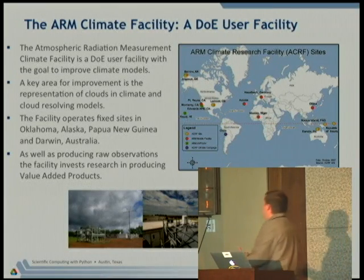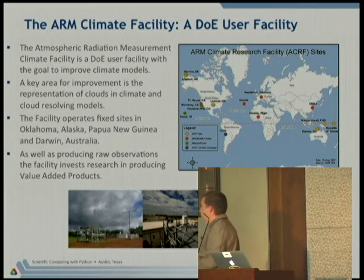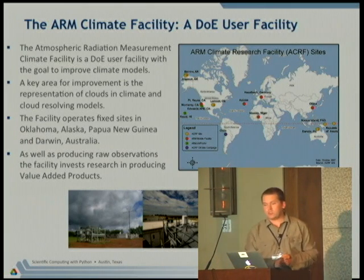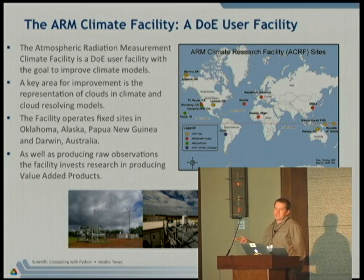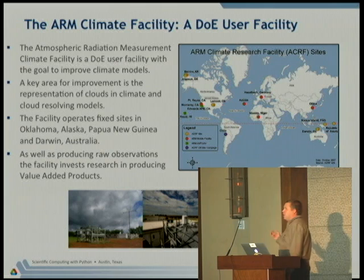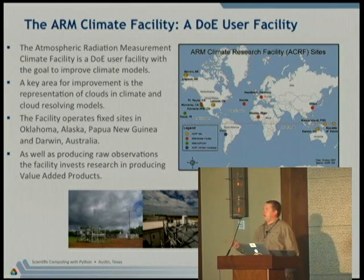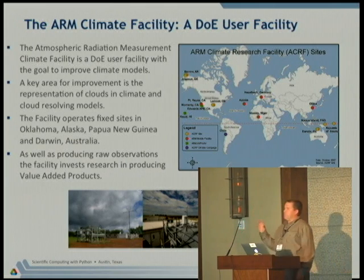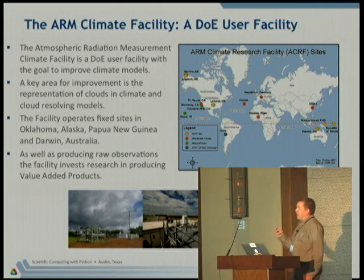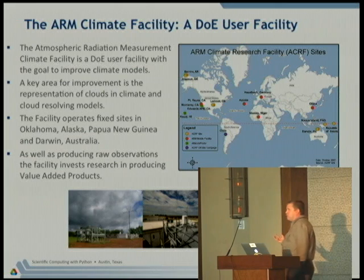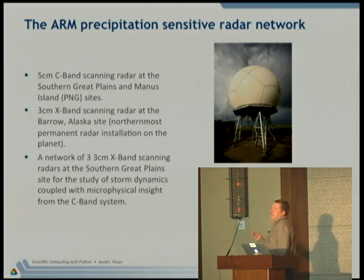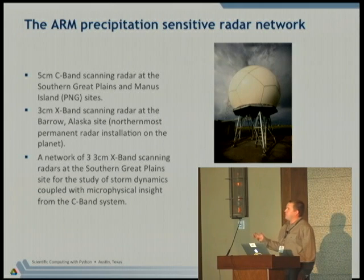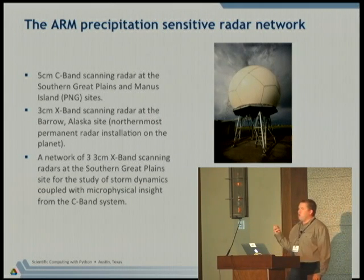ARM stands for Atmospheric Radiation Measurement. The facility I work with is a Department of Energy user facility. We have sites across the world ranging from Oklahoma to Darwin, Australia, Manus Island, Papua New Guinea, and the north slope of Alaska. We have a mobile facility that travels the world. Basically, we're there to catalogue the climates, to monitor what's happening in the atmosphere and create a virtual picture of the climate in these locations to improve the representation of atmospheric processes in cloud and climate models. Traditionally we focused on radiometric properties — sunlight in, sunlight out. Recently we've started to focus a lot more on clouds, which has necessitated us to move into remote sensing science, particularly scanning radars.